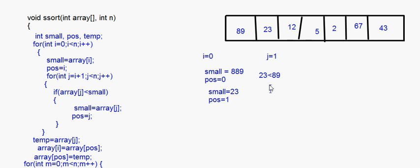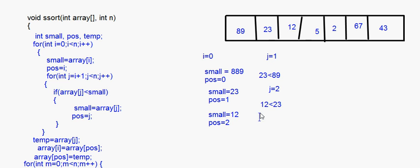J increments to 2. Array[2] is 12. 12 is less than 23, so small becomes equal to 12 and pos becomes equal to 2. Then j becomes 3. If array[j] is less than small — small is 12 — and 5 is less than 12, so small becomes equal to 5 and pos becomes equal to 3.